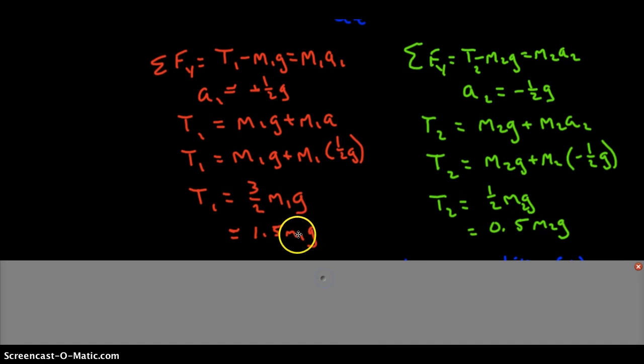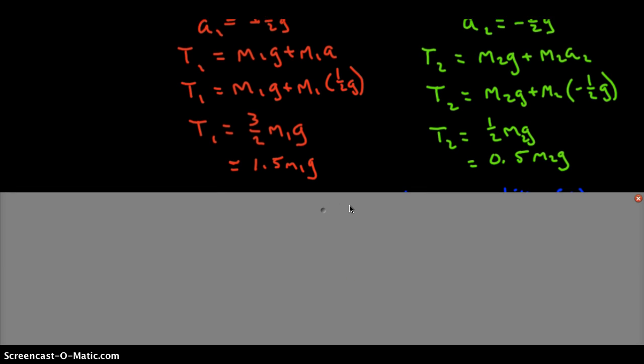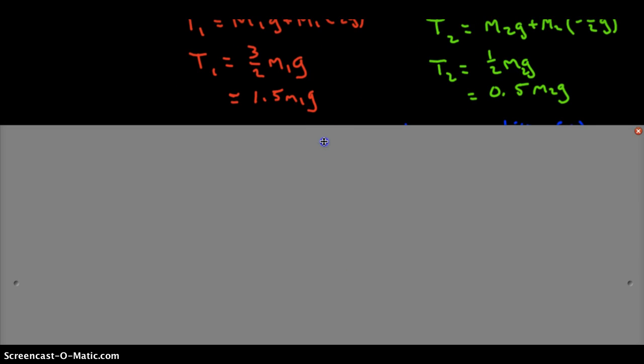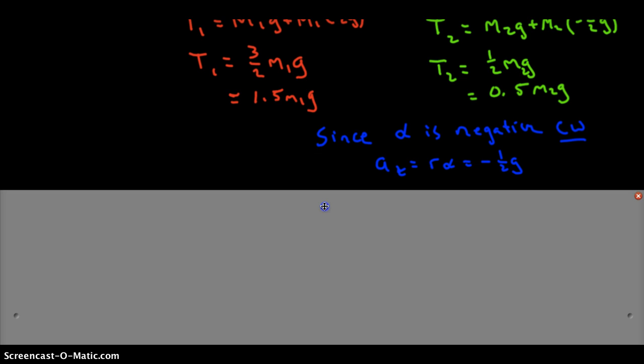All right, I'm going to express that just in decimal form. Now we can substitute those values back into our torque equation. So the one other thing that we need to think about for our torque equation is since that alpha is negative, since we have a clockwise rotating disc, what we're going to put in for that value for the tangential acceleration, our alpha, is going to be minus one-half g.